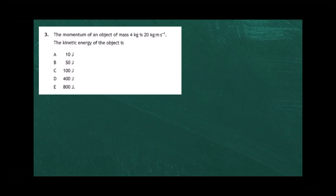Question 3 from the 2023 Higher Physics examination paper 1 from the SQA. The momentum of an object of mass 4 kilograms is 20 kilogram meters per second. The kinetic energy of the object is — and we're given our five usual responses. We need to recognize that momentum p equals mass times velocity.